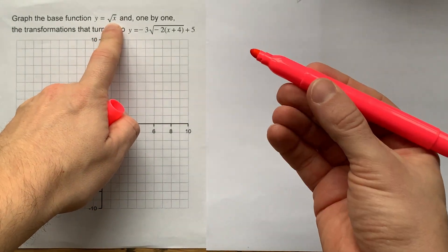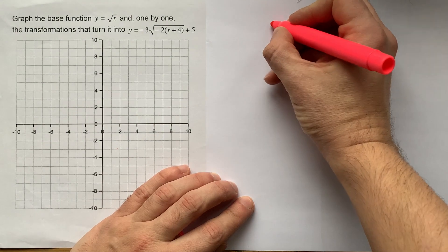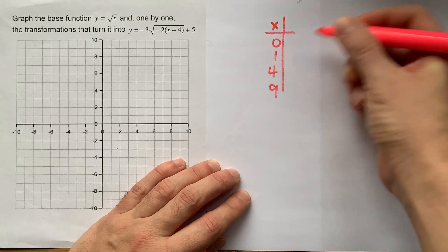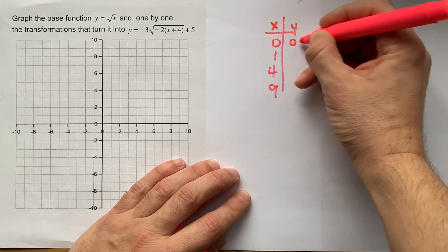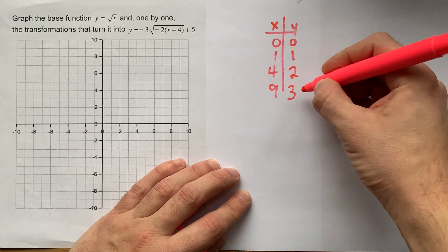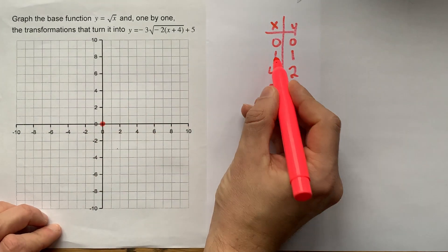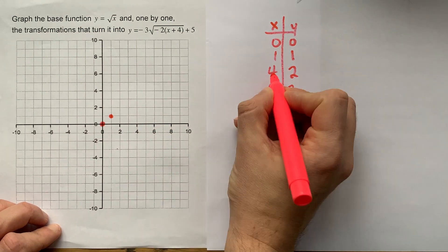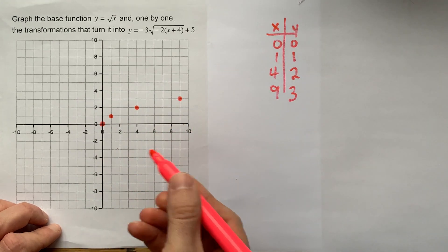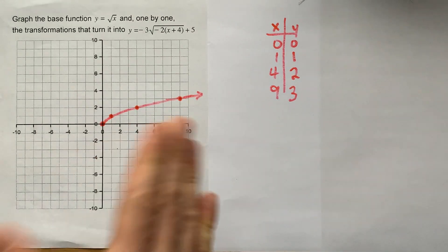We're going to start with the base function, which I'll put in pink. You'll have to know what y equals square root of x looks like. The x values teachers pick are 0, 1, 4, and 9, because you can take the square root of each. The square root of 0 is 0, of 1 is 1, of 4 is 2, and of 9 is 3. So the base function has points at (0,0), (1,1), (4,2), and (9,3). It looks like half a parabola turned on its side.